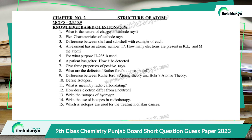For what purpose is U-235 used? A patient has a goiter — how will it be detected? Give three properties of positive rays. What are the defects of Rutherford's atomic model? Difference between Rutherford's atomic theory and Bohr's atomic theory. Define isotopes. What is meant by radiocarbon dating? How does an electron differ from a neutron? Write the isotopes of hydrogen. Write the uses of isotopes in radiotherapy. Which isotopes are used for the measurement or treatment of skin cancer?